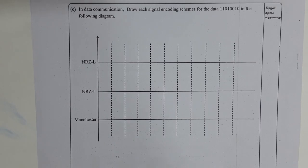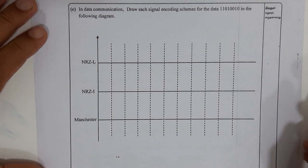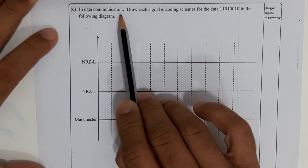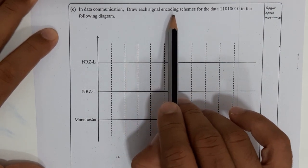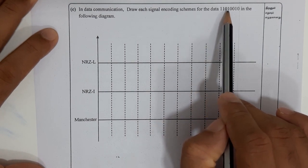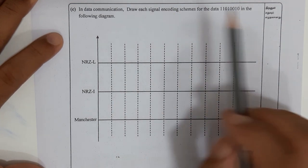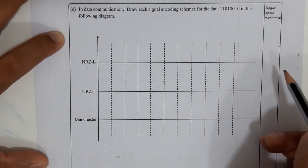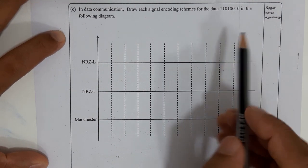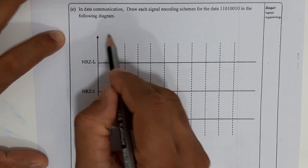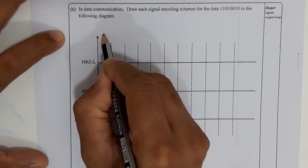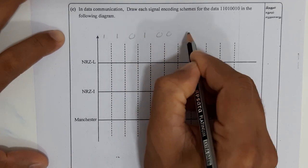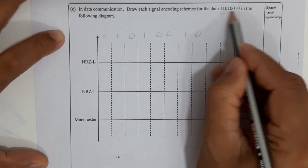Now we work through the practice question, which you can download from the link below. The question says: in data communication, draw each signal encoding scheme for the data 1, 1, 0, 1, 0, 0, 1, 0 in the given diagram. This is an expected question in the paper since it was introduced into the new syllabus. The bits are 1, 1, then 0, again 1, double 0, then 1, 0.